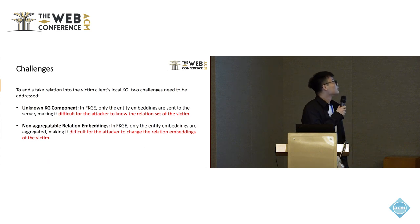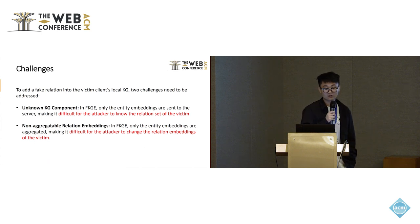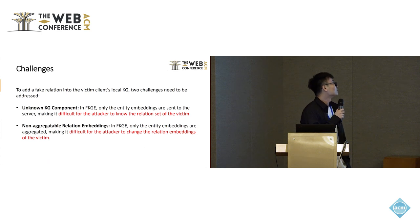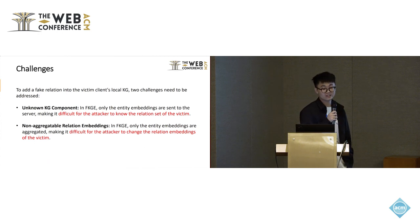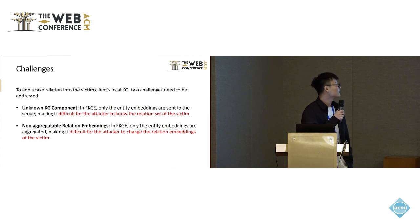To add a fake relation into the victim client's local KGE model, two challenges need to be addressed. The first is unknown KGE components — in FKGE, only entity embeddings are sent to the server, making it difficult for the attacker to know the relation set of the victim. The second is non-aggregable relation embeddings — in FKGE, only entity embeddings are aggregated, making it difficult for the attacker to change the relation embedding of the victim.